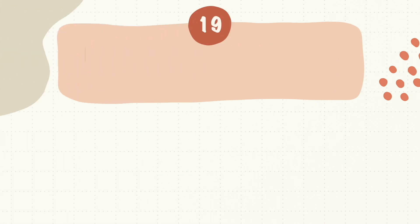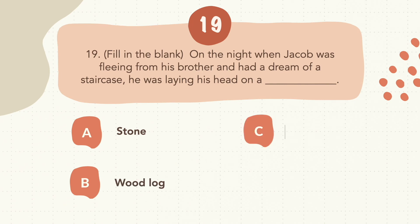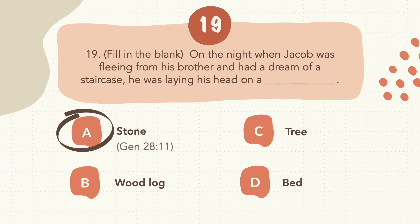Question 19: Fill in the blank. On the night when Jacob was fleeing from his brother and had a dream of a staircase, he was laying his head on a… The correct answer is A, a stone.